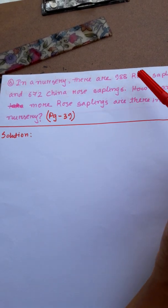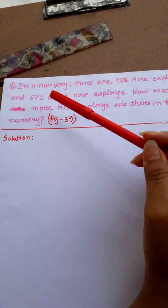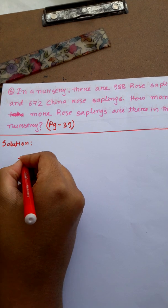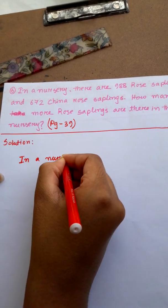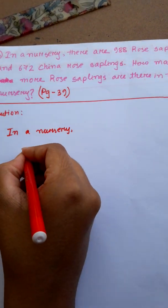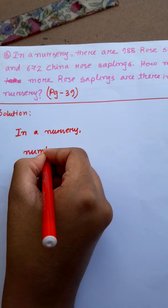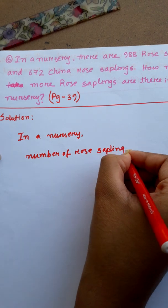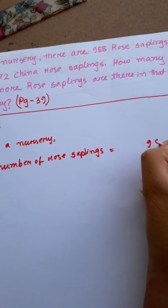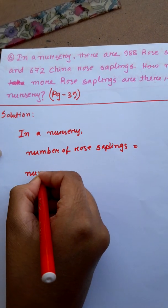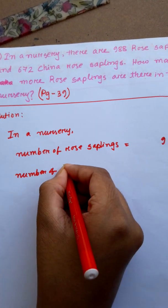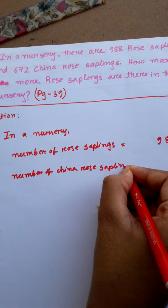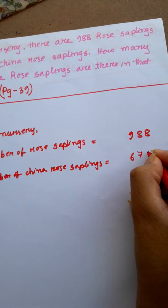So here we have to write: In a nursery, the number of rose saplings is equal to 988, and the number of china rose saplings is equal to 672.